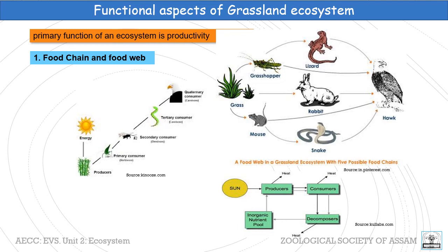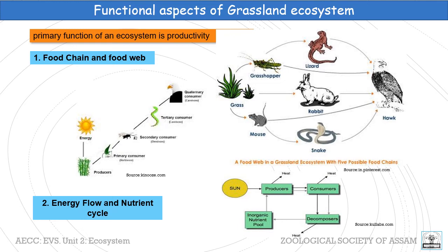Generally in a grassland ecosystem, several food chains are present which are interconnected, representing a food web. In this picture we can see a very typical food web found in a grassland ecosystem.